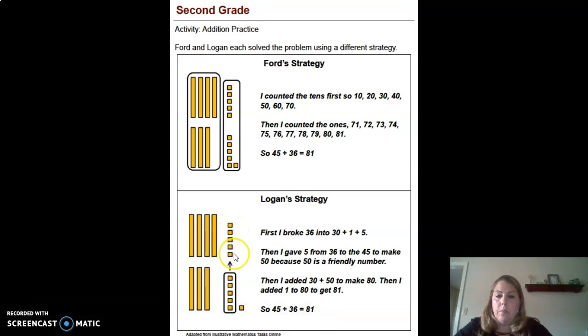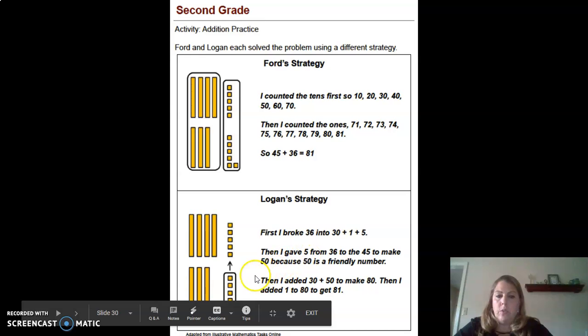When he combined it with this group of five, it became 10 more. And so then it became 50. So the five from the 36 to the 45 up here, adding five more to it made it 50, and 50 is a friendly number.